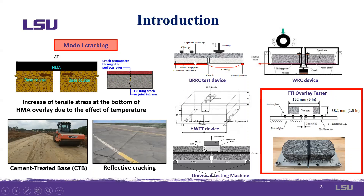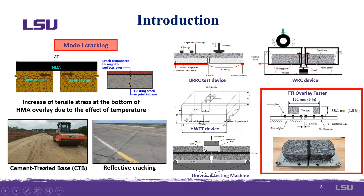Various laboratory test setups have been developed by researchers worldwide that can simulate reflective cracking occurring in the field, such as the BRRC test device, wheel reflective cracking device, Hamburg wheel tracking test device, or universal testing machine. But the most popular and most commonly used device that simulates thermally induced reflective cracking is known as the Texas Transportation Institute overlay tester. However, it is important to assess the effectiveness of the current overlay tester setup to justify its ability to accurately differentiate between the performances of various hot mix asphalt mixtures.